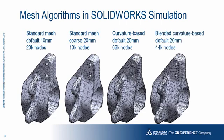The blended curvature-based mesher generates a better distribution similar to the curvature-based mesher, but with a smaller number of nodes. In this example, for the same typical element size, the curvature-based mesher generates a much better distribution adjusted to the geometry compared to the standard mesher.